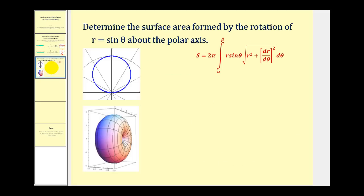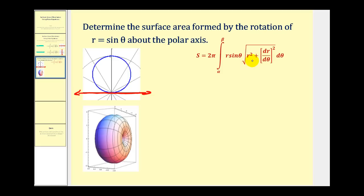We want to determine the surface area formed by the rotation of r equals sine theta about the polar axis. Here we see the graph of r equals sine theta. If we rotate this about the polar axis, we create this solid, which is called a pinched torus. We want to determine what the surface area of this solid would be, using the formula for rotation about the polar axis.